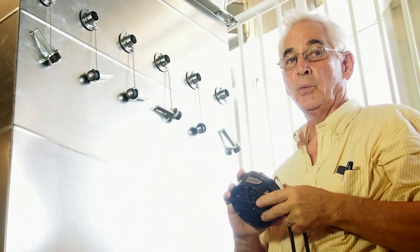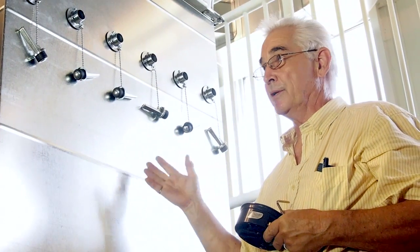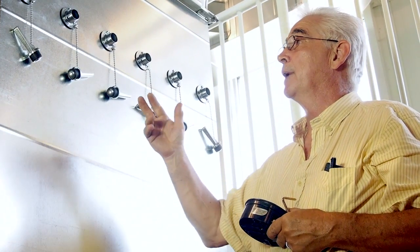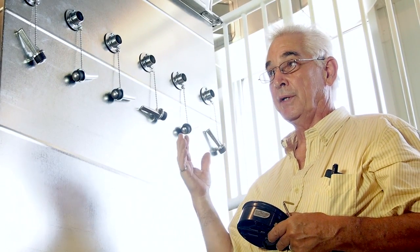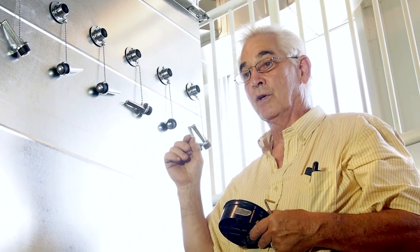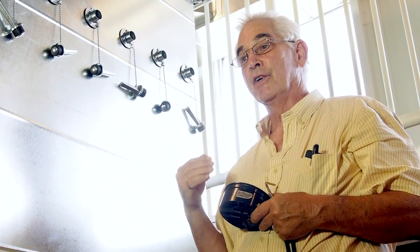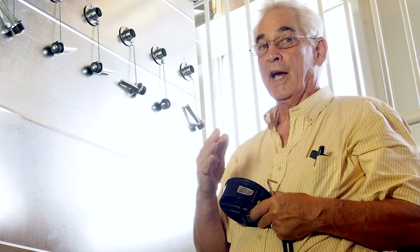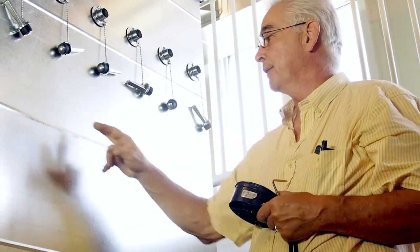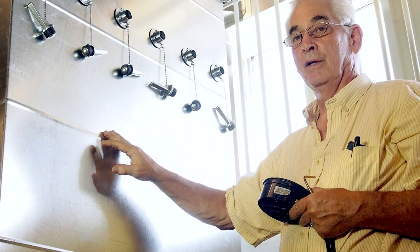Now, you take each one of those velocity pressure readings that you've just recorded. In our case, we'd have 6 times 4. We'd have 24 readings. We take each one of those 24 velocity pressure readings, convert them to a velocity. Take the average of those 24 velocities and multiply it by 4, the number of square feet we have.